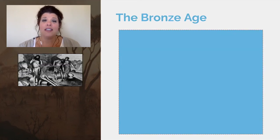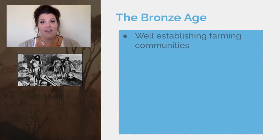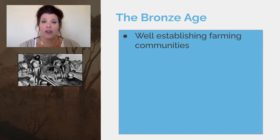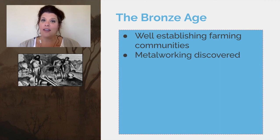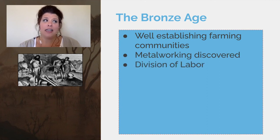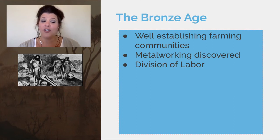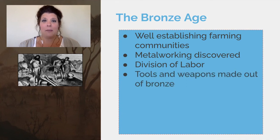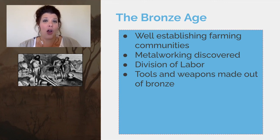Eventually this leads us to the Bronze Age, and that's when things really start happening. There were established farming communities, which means people got really good at agriculture. That gave them time to discover metalworking and gave everybody different jobs — that's called division of labor, when you can specialize in a job you're really good at. Some people were tool makers and weapon makers using bronze metal instead of just stones and bones.